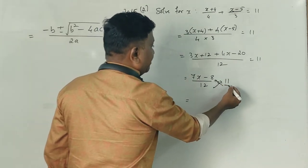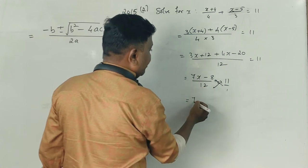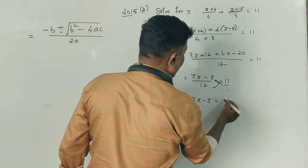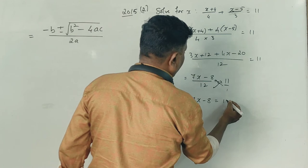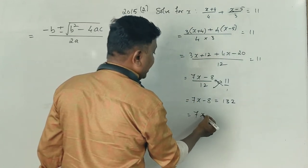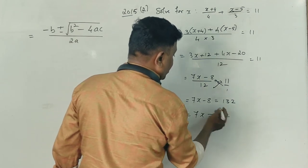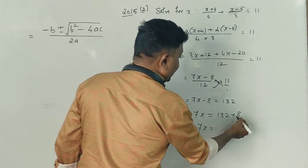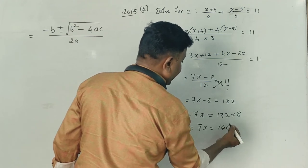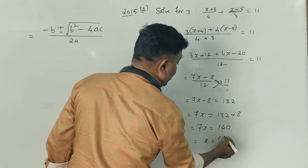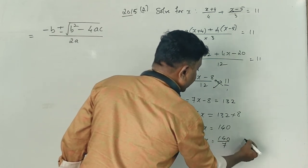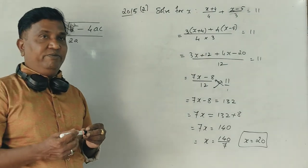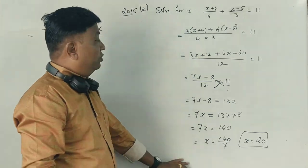Cross multiply. 7 into x is 7x. 1 into 8 is 8. 11 into 12 is 132. So 7x is equal to 132. Then 7x is equal to 132 plus 8 is 140. So x is equal to 140 divided by 7. Therefore x is equal to 20. This is 6 marks.